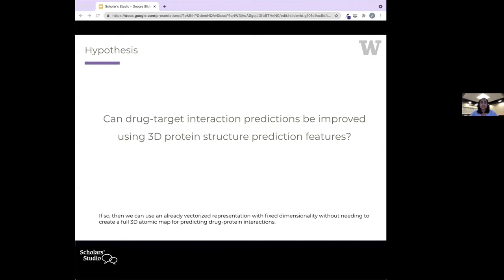The hypothesis for my project is: can we use these hidden layers within this deep learning model that give information about a protein's 3D structure to improve drug target interaction predictions?